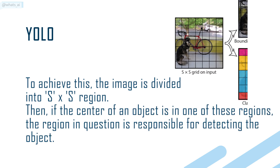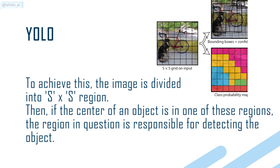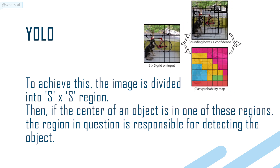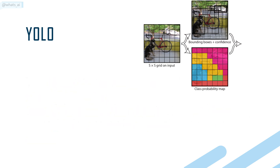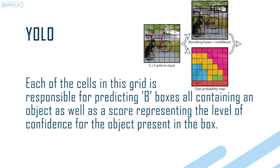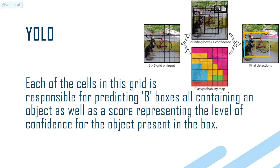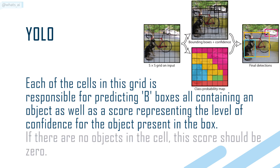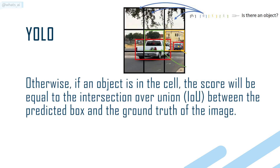If the center of an object is in one of these regions, that region is responsible for detecting the object. Each of the cells in this grid is responsible for predicting B boxes, all containing an object, as well as a score representing the level of confidence for the object present in the box. If there are no objects in the cell, this score should be zero. Otherwise, the score will be equal to the Intersection over Union (IoU) between the predicted box and the ground truth of the image.